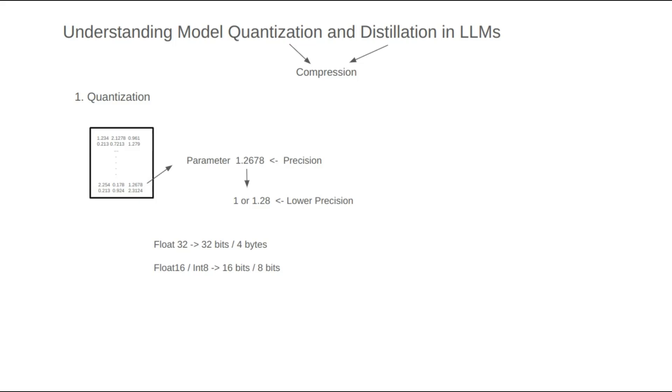For example, float16 uses 16 bits, half the space of float32. Int8 uses 8 bits, one quarter the space of float32. Quantization, then, is the process of converting each or some of the model's parameters into lower precision data types. This reduces storage requirements and speeds up inference.